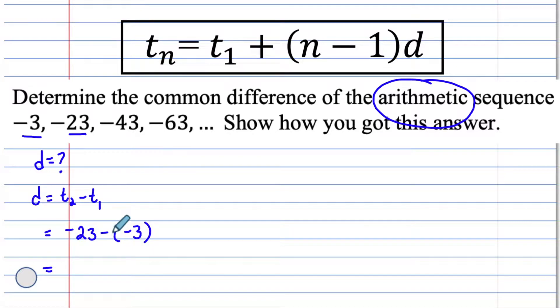When we have a bracket like this, it's like a negative 1 times a negative 3, which makes a positive. What we're doing is we're combining negative 23 plus 3 to give us a negative 20.